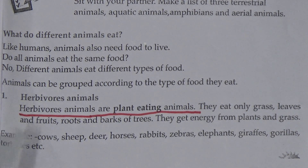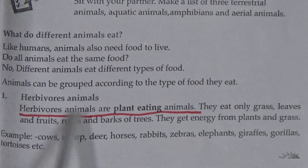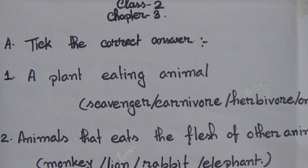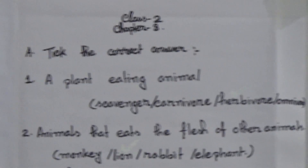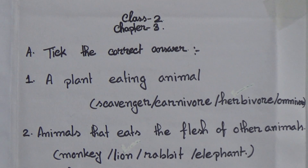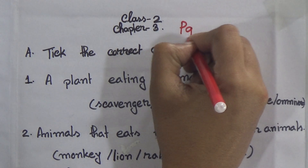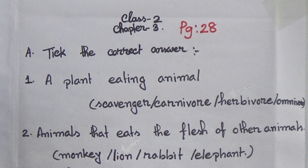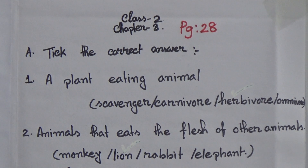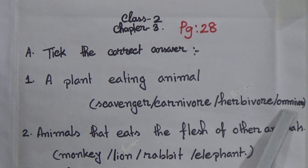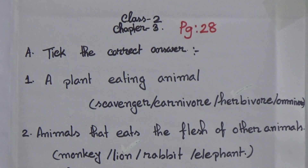Dear students, with these two pages we will now solve Exercise A, which is on page number 28. You have to solve this exercise with me, and then do it as your homework. First question: a plant-eating animal — scavenger, carnivores, herbivores, omnivores. Dear students, it will be herbivores. Put a tick mark on herbivores.